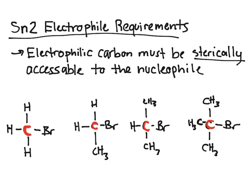The only difference between these molecules is the number of methyl groups on the carbons. CH3s, or methyl groups, are a lot bigger than hydrogens. So if a nucleophile were to try to come in and attack any of these carbons, it would be a lot harder if there were more atoms in the way — like methyl groups, since they're bigger. The more methyl groups attached to the carbon, the harder it is for the nucleophile to access the electrophilic carbon.